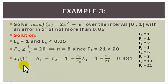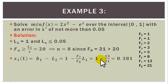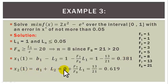So we now compute X1 of 1: X11 is equal to B1 minus L2, which is equal to 1 minus L2 is F7 over F8 times L1. That is 1 minus 13 over 21, and that will give us 0.381. X2 is A1 plus L2 which is 0 plus F7 over F8 times L1, and that is 13 over 21 which is equal to 0.619.